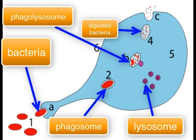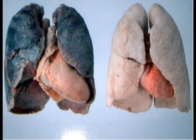Then the content will be exocytosed, meaning that it will be released from the cell, as you see in the illustration. In this picture, you see two lungs — one is a normal lung and one is pathological. You can assume that the right one is the normal lung.